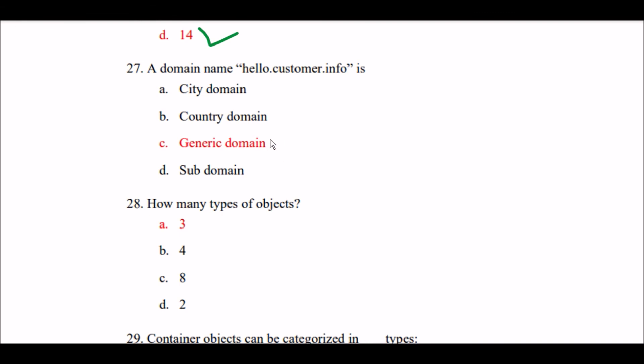Next question: A domain name — hello.customer.info — the right answer is Option C, generic domain. A domain name like hello.customer.info is a generic domain.